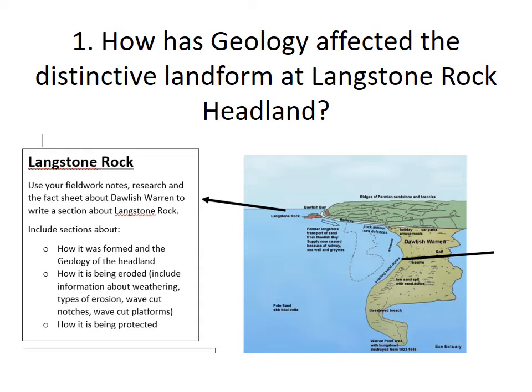I'm not expecting loads and loads of writing here. Use your notes from last lesson and the fact sheet I put on Show My Homework a couple of weeks ago. I want you to explain how the headland was formed and how the geology has affected it — talking about the sedimentary rock, the fact that it was laid down 500 million years ago, the brachia, that kind of thing. Then you need to write how it's being eroded, including pictures of the arch, and also how it's being protected.